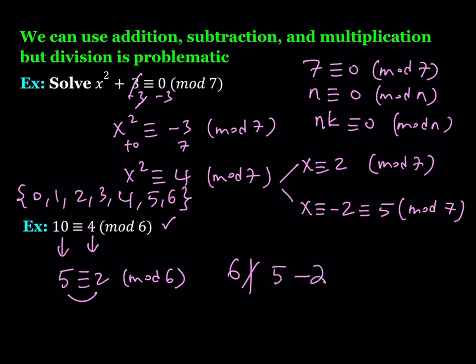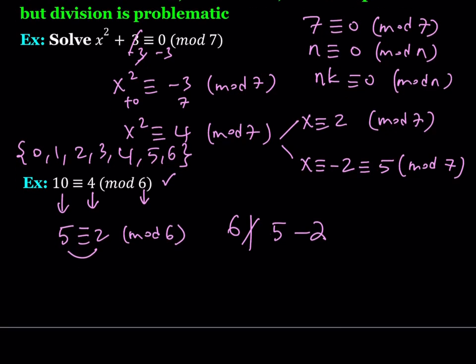So division is problematic, but there is a way to overcome it sometimes. If you divide both sides — including the mod — by the common divisor, then you'll be good to go.